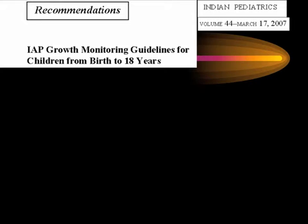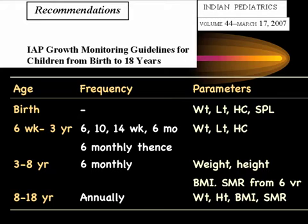When should we monitor growth is a major question, addressed clearly by the IAP growth monitoring guidelines 2007, which states every child should be measured at birth. Key parameters include birth weight, which has implications for long-term outcome. Birth length and head circumference are unfortunately not commonly recorded, but they give more information about the type of growth failure, particularly in small-for-gestational-age children, helping distinguish intrinsic versus extrinsic pathology.